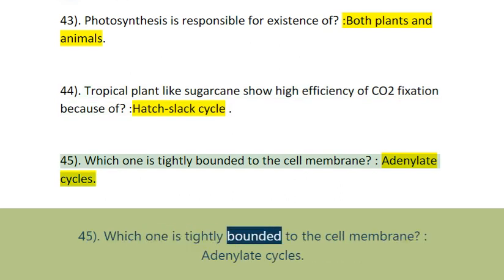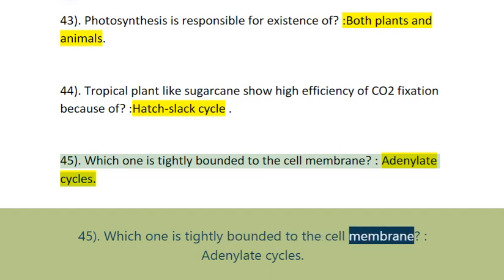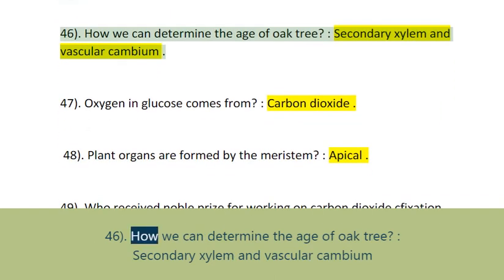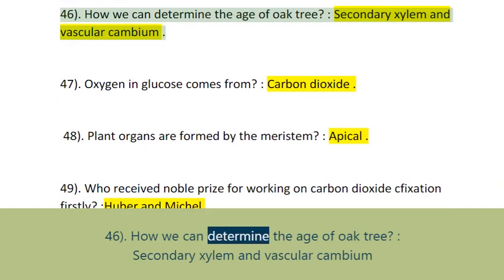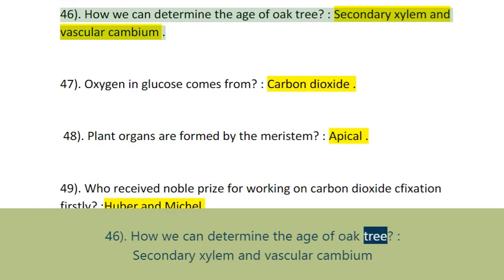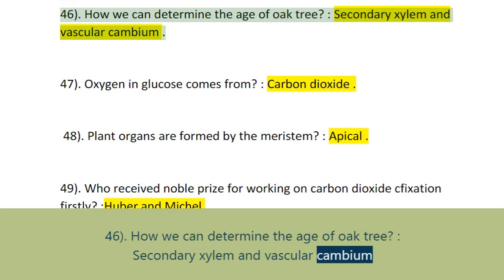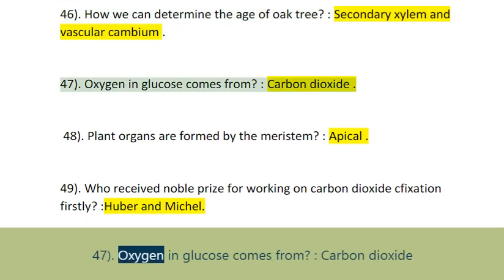Question 45: Which one is tightly bounded to the cell membrane? Question 46: How can we determine the age of an oak tree? By secondary xylem and vascular cambium.